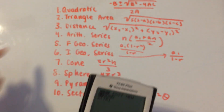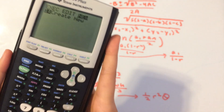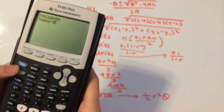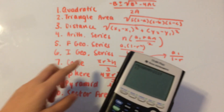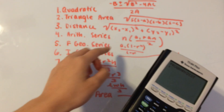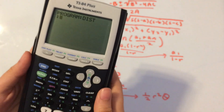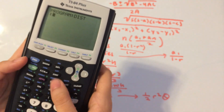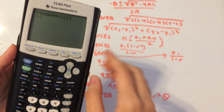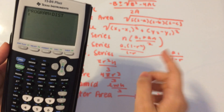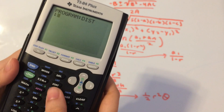Let's make another one for the distance formula. Mouse over to New and create a new program; call this one DIST. The distance formula only needs two points — we subtract the x-values and subtract the y-values. We'll prompt for four values: A and B being x1 and y1, and C and D being x2 and y2.